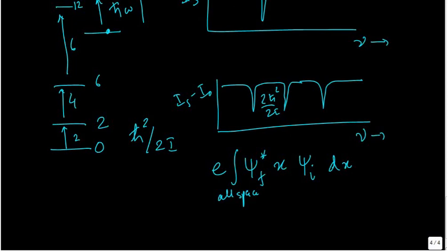But otherwise also if you think if i and f both are odd, then the combination of that makes an even function, x is an odd function. So the entire integral becomes odd goes to 0. If both of them are even, then also it will happen. The only case is not happen is when one is odd, one is even. And if you do the entire calculation, what you realize is it is possible only from state i to i plus 1.